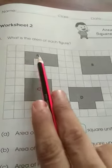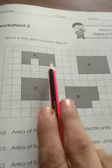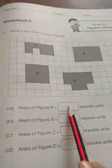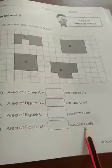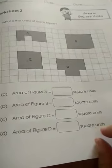1, 2, 3, 4, 5, 6, 7. So, you will write it. Area of figure A is 7 square units. In the same way, you will count it in B and then C and then D and write it here. So, it is very easy and simple. So, you can do this page in your homework. Page number 129.